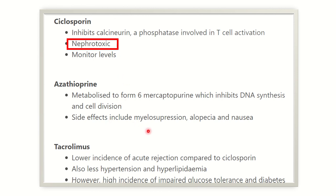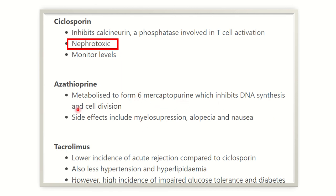Azathioprine causes myelosuppression — that means bone marrow suppression — as well as alopecia (hair loss) and nausea. It is metabolized to 6-mercaptopurine, which inhibits DNA synthesis and cell division.